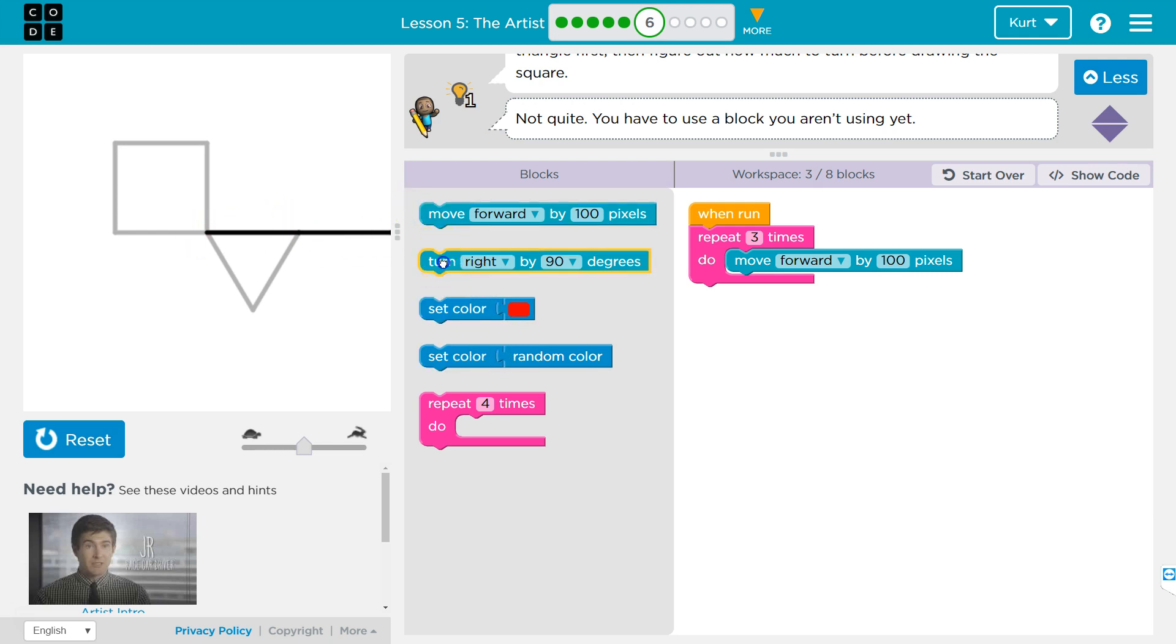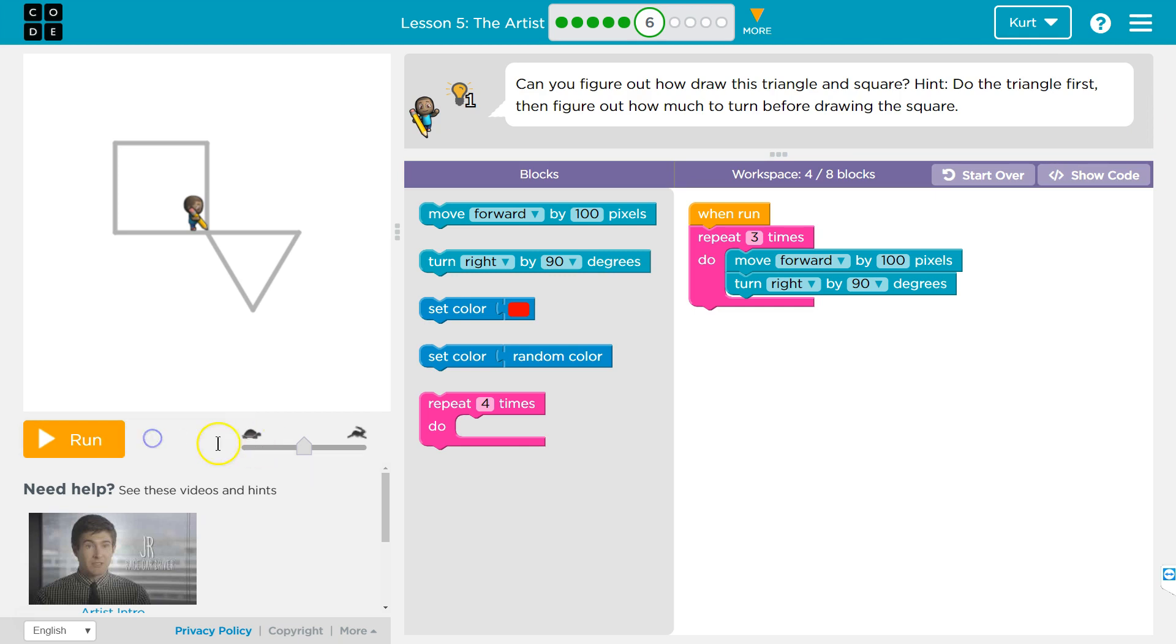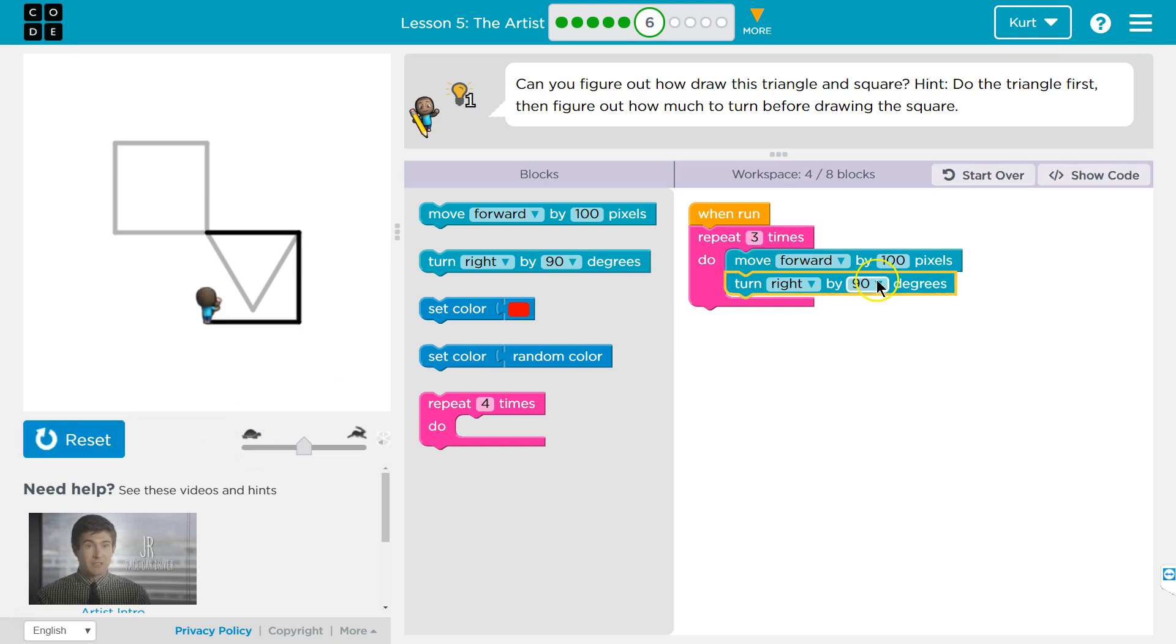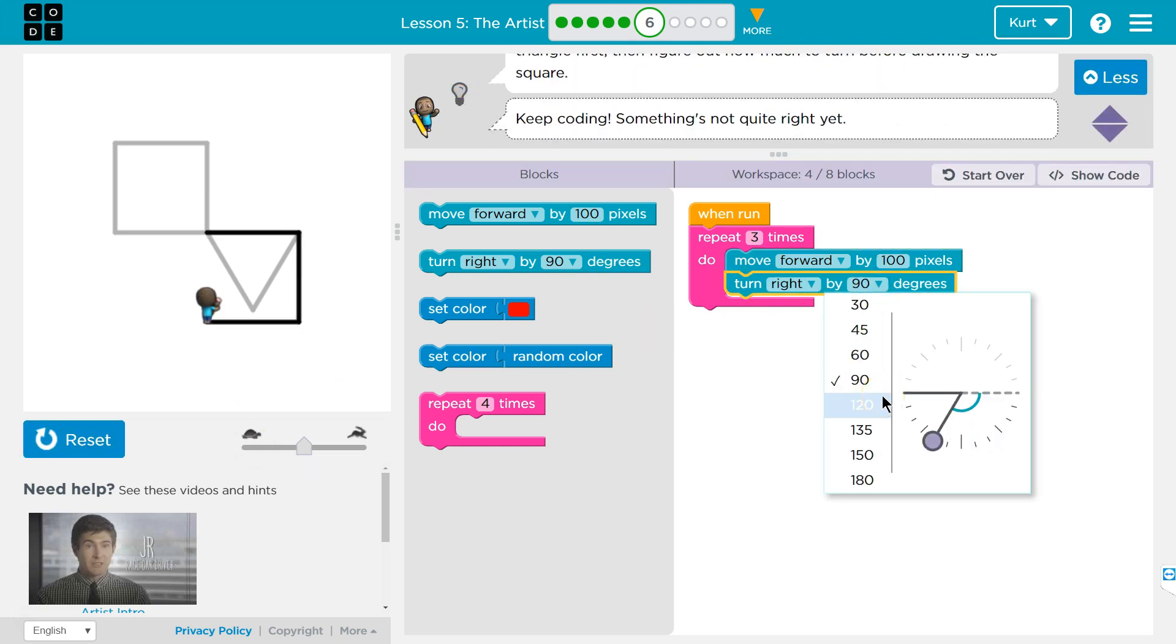Now, each time I move forward to draw a triangle, if I'm going to draw three sides, I need to also have three corners, three angles. So it's not a right angle because a right angle would be for a square. Let's try out, I think, 120.